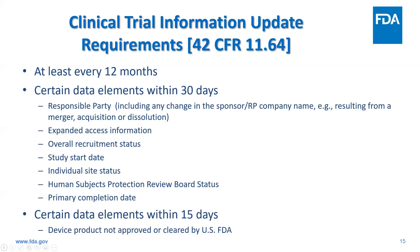Subpart D of the final rule describes the requirements for when the clinicaltrials.gov record must be updated. In general, any change to the record must be updated not less than once every 12 months. Other study data elements require an update within 30 days of any change — for example, recruitment status, study start date, expanded access availability of the product. It is particularly important to make sure contact information, such as names of responsible parties and sponsors, if they have changed, are correct and updated in a timely fashion.